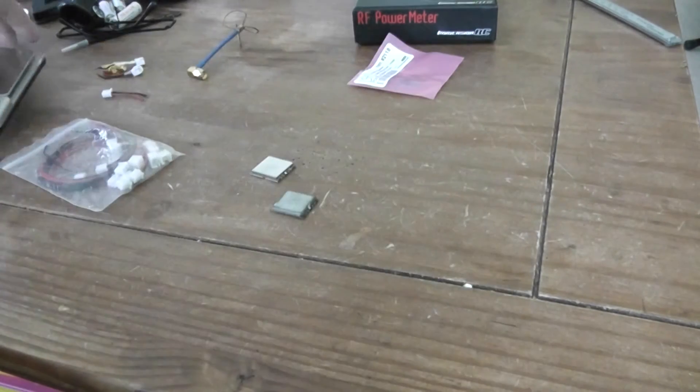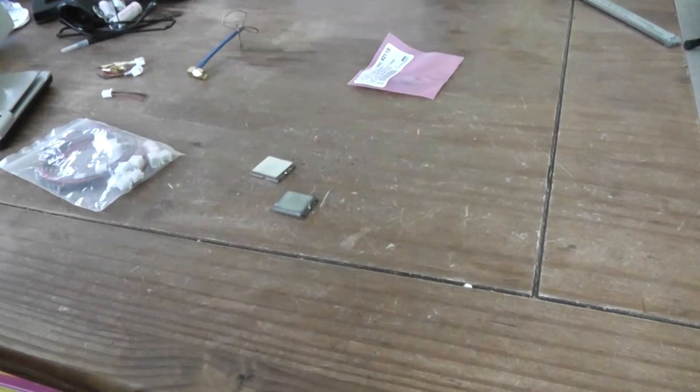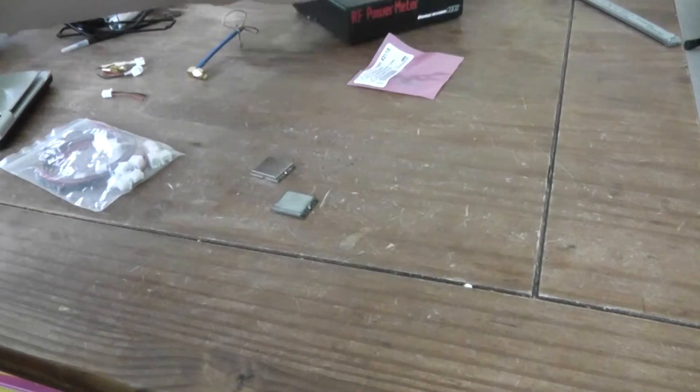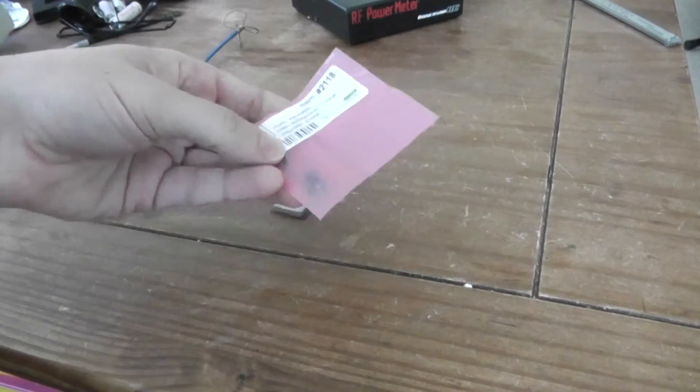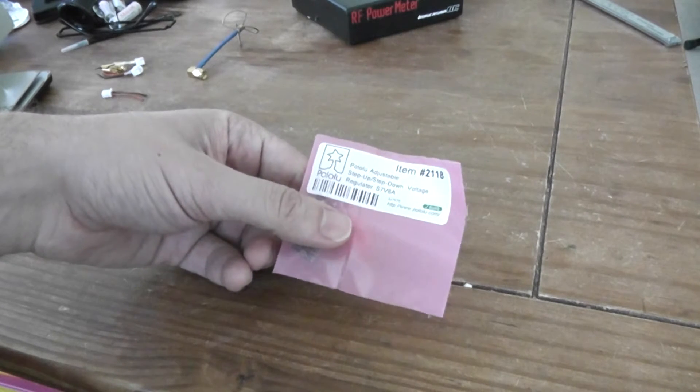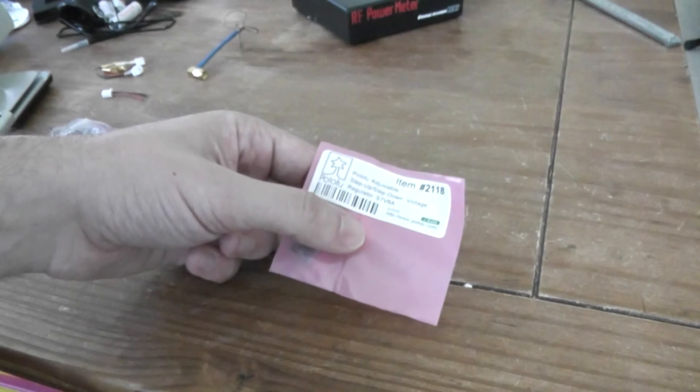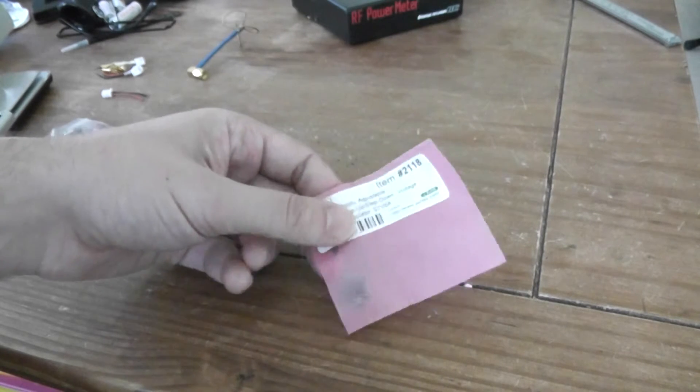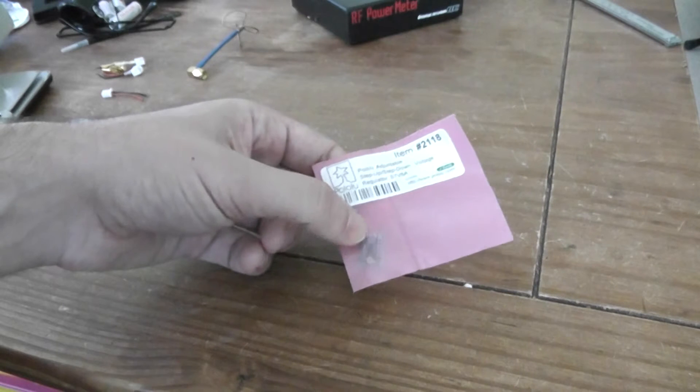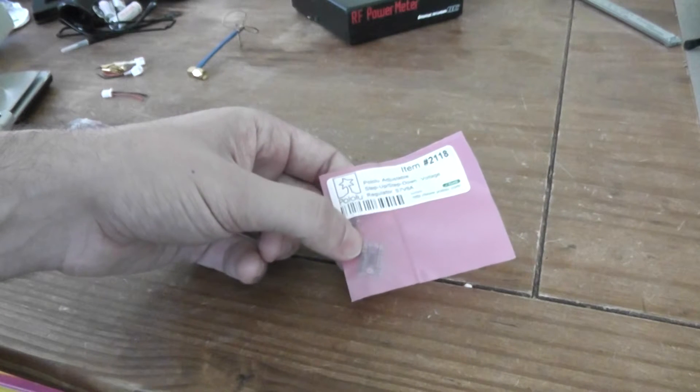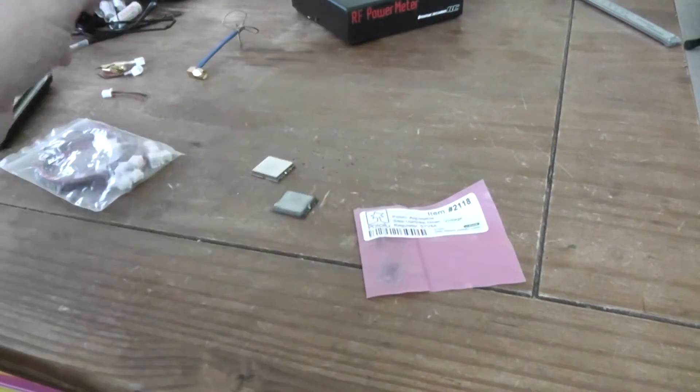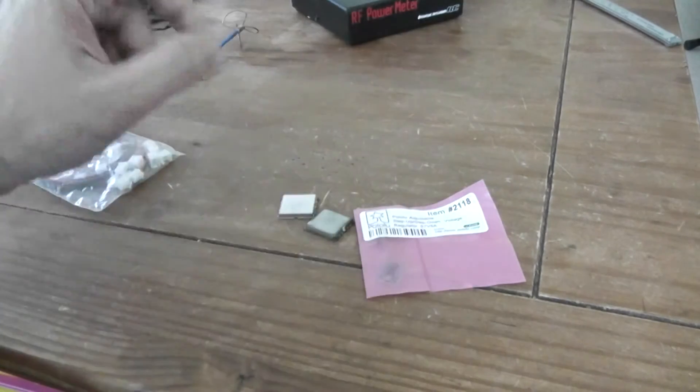I will test first the emitted power. I will use my RF power meter. In order to give a range of powers, I will use this Pololu voltage regulator, this S7V8. I think I will bench the emitted powers from 3.5V up to 5V. I will see if there is an incidence. I will probably also measure the emitted heat.